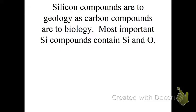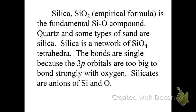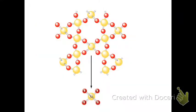Silicon compounds are, to geology, what we think of carbon compounds are to biology. They're the most important, and they contain silicon and oxygen. Silica, which is silicon dioxide, is the fundamental compound. Quartz and some types of sand are silica, and it is a network of SiO₄ tetrahedra. The bonds are 3p orbitals are too big, and then the silicates are anions of Si and O. And that's what that looks like, and they're arranged together.